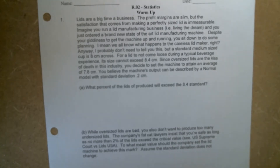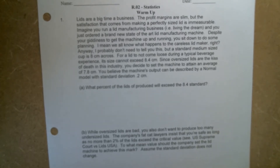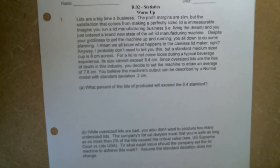We all know what happens to the careless lid maker. A standard medium-sized lid cup is eight centimeters across. For a lid to not come loose during a typical beverage experience, its size cannot exceed 8.4 centimeters. Since oversized lids are the kiss of death in this industry, you decide to set the machine to attain an average of 7.8 centimeters. You believe the outputs can be described by a normal model with a standard deviation of 0.2 centimeters.